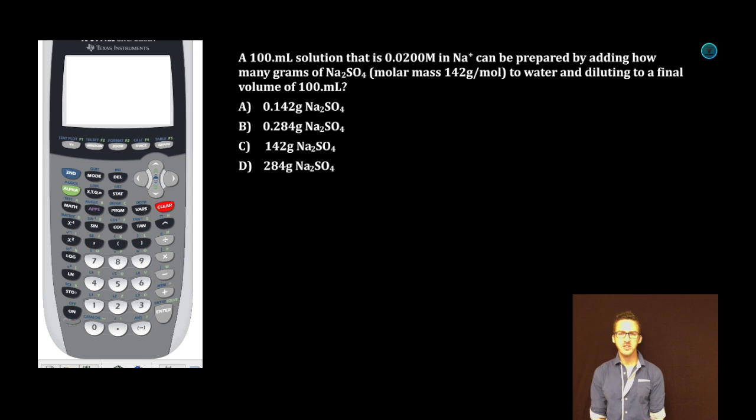A 100 milliliter solution that is 0.0200 molar in sodium ions can be prepared by adding how many grams of sodium sulfate, molar mass 142 grams per mole, to water and diluting to a final volume of 100 milliliters.